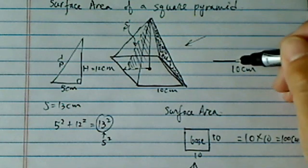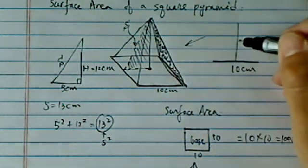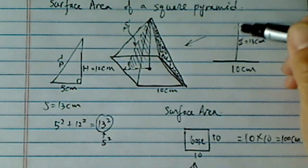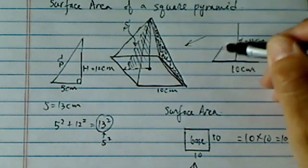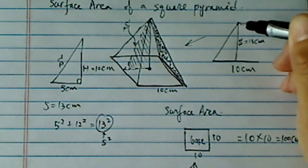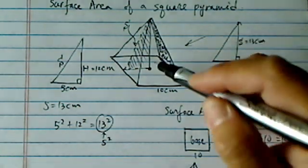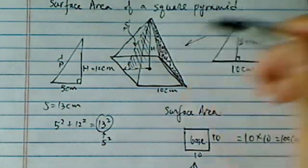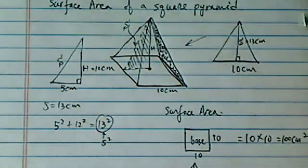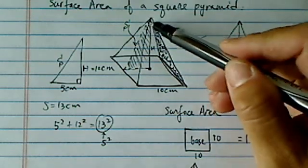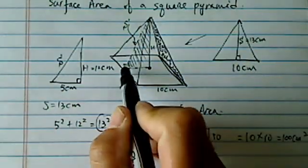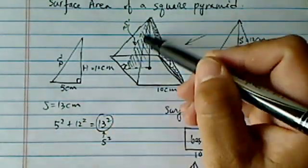Then, you have the slanted line here, equal to 13 cm. I think this is where the confusing part for a lot of students. The slanted height here is not the height of the pyramid. They're different. So, on the side of the surface, this one is a right triangle here.